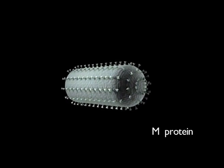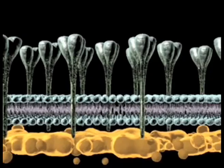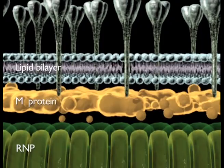Underneath the envelope is the matrix, or M-protein. This tightly folded protein forms a link between the two major structural components of the virus. It interacts with both the lipid bilayer of the envelope and the ribonucleoprotein core.